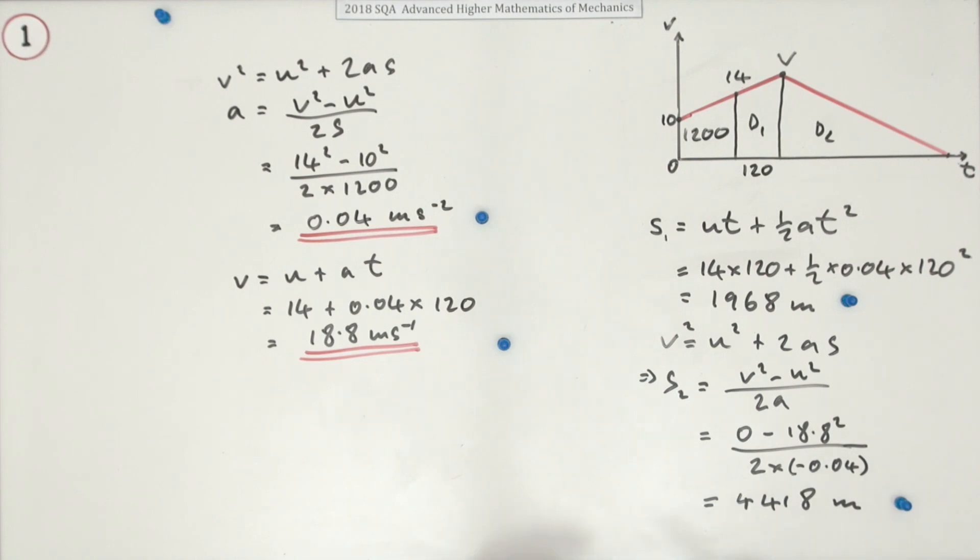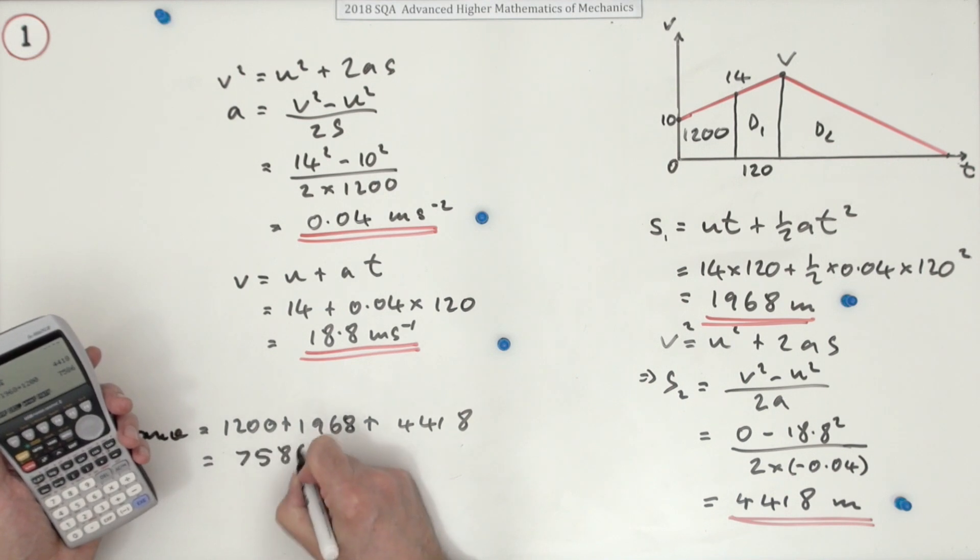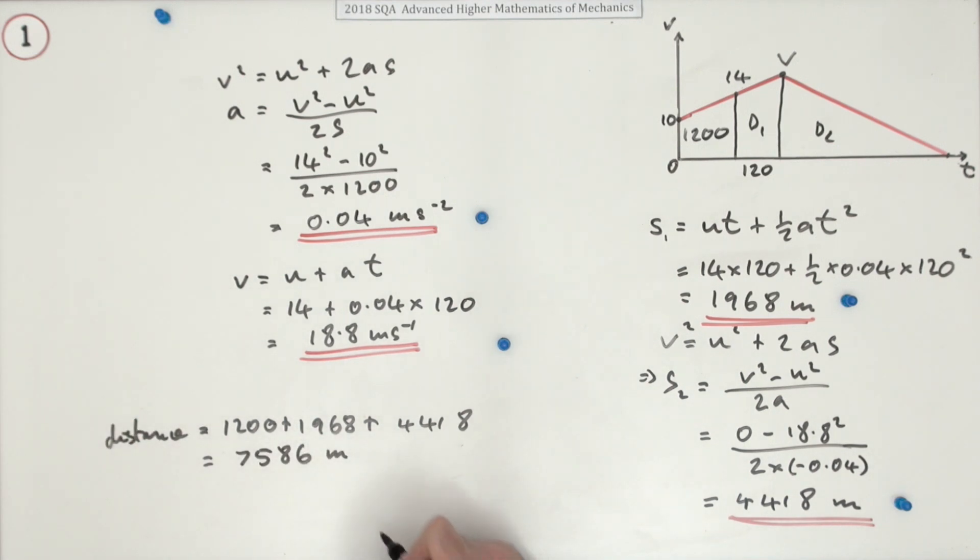That's another mark. Almost there for the first five marks. So what was the total distance? Total distance was made up of the 1200 from the first part, the 1968 from the second part, and the 4418 for the third part. Pop it in your calculator and you get 7586 meters for the final mark, or if you like, 7.586 kilometers for the final mark.